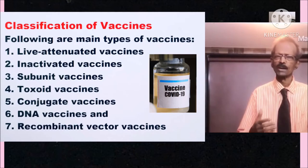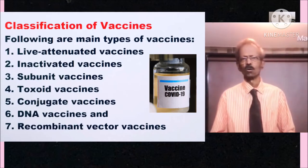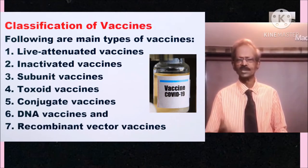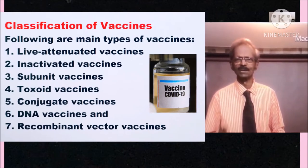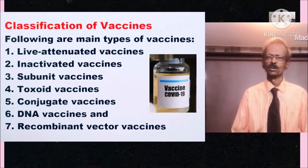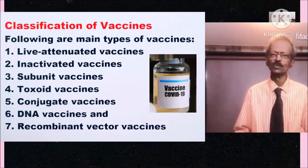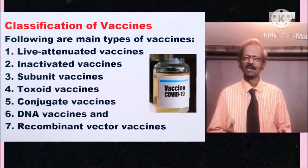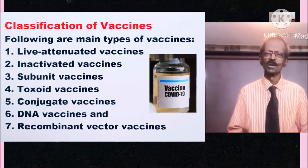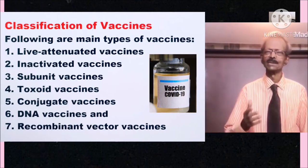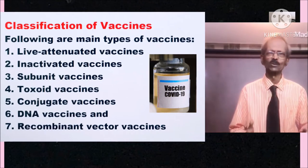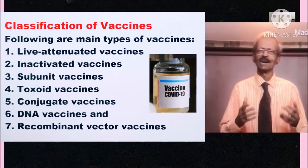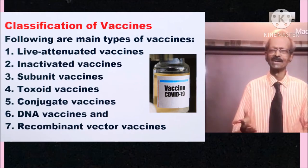Vaccines can be classified as follows: 1. Live attenuated vaccines, 2. Inactivated vaccines, 3. Subunit vaccines, 4. Toxoid vaccines, 5. Conjugate vaccines, 6. DNA vaccines, 7. Recombinant vector vaccines.